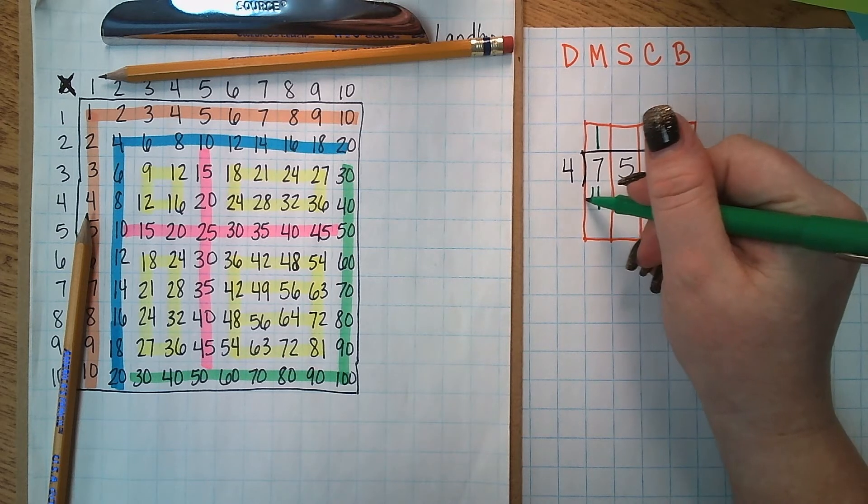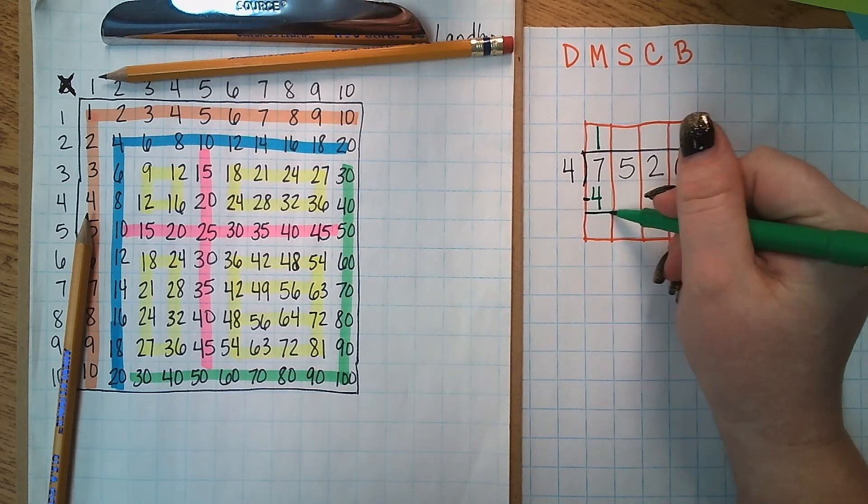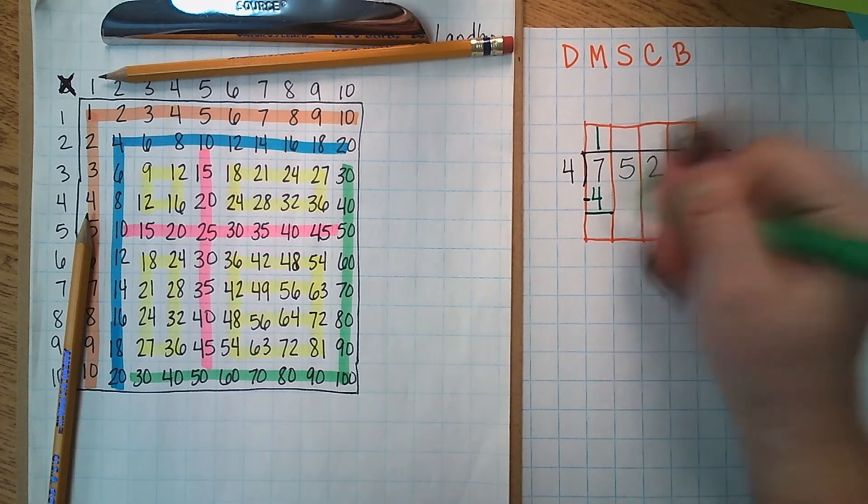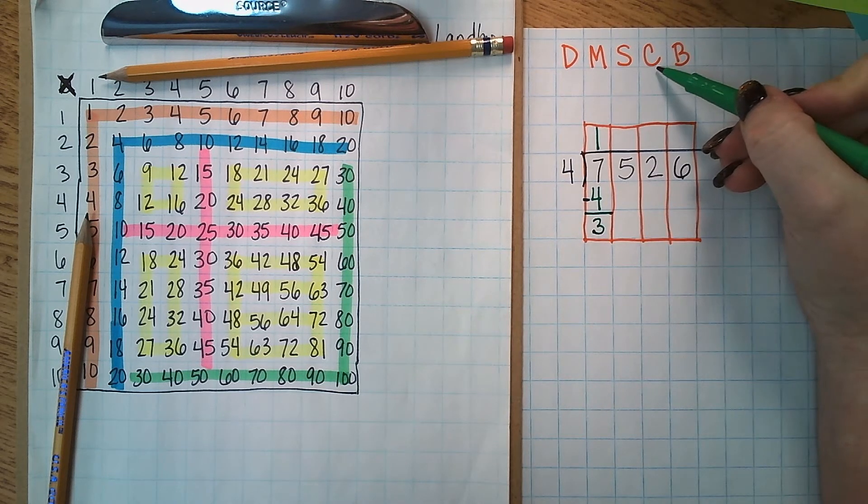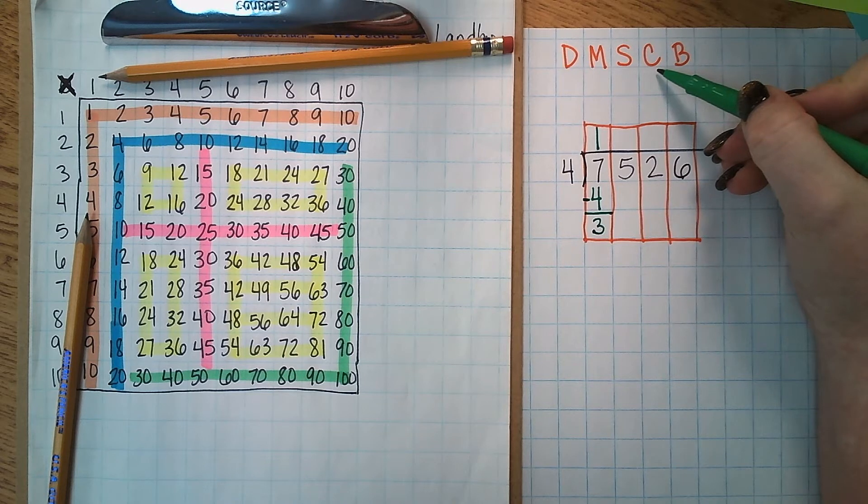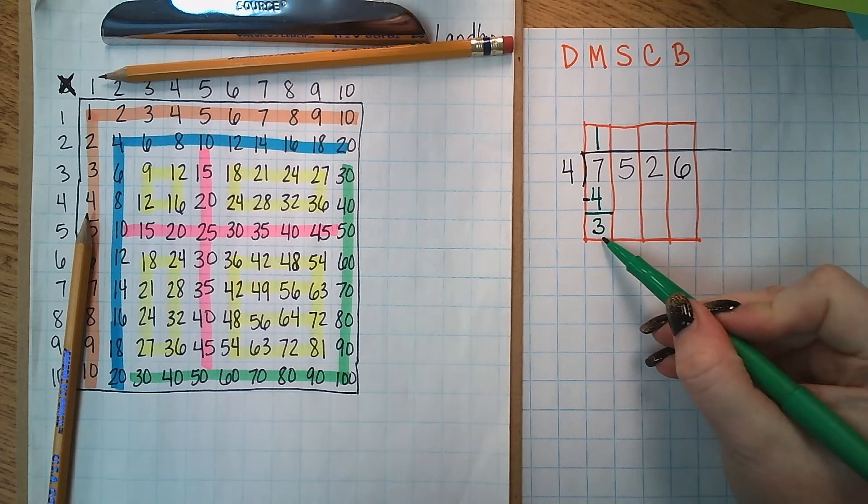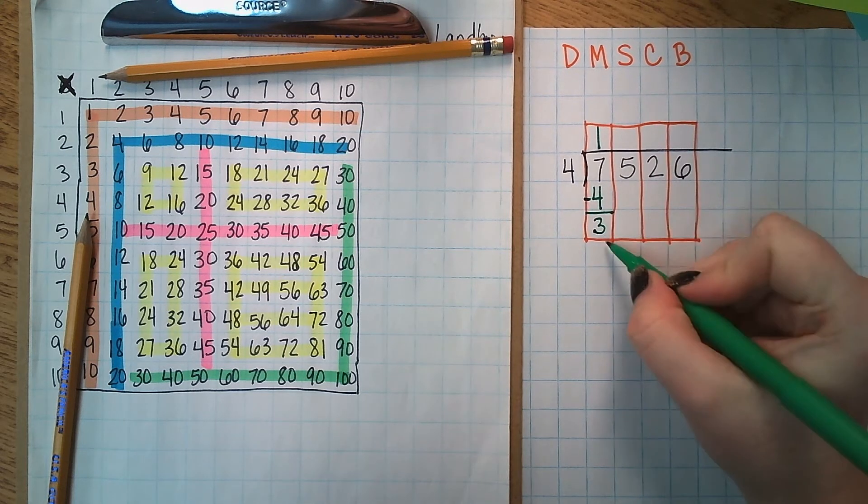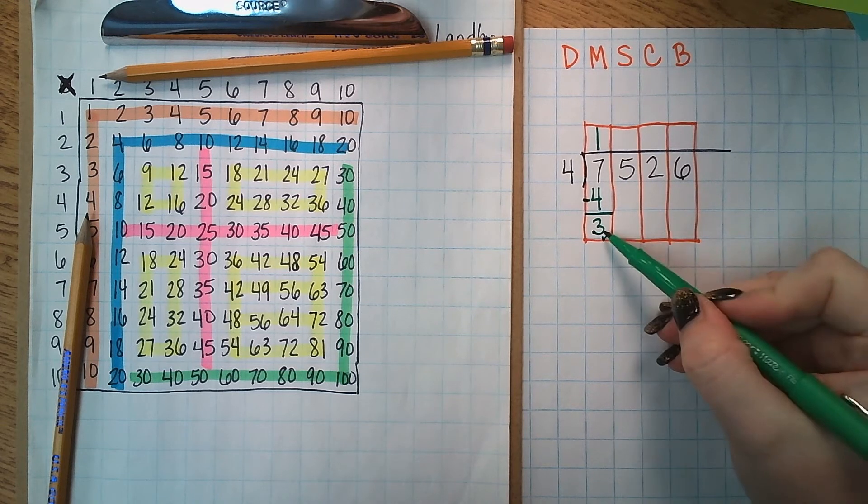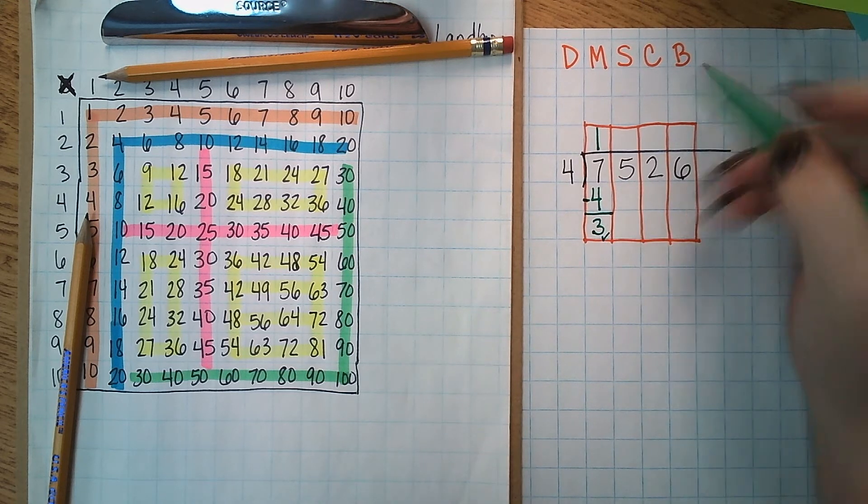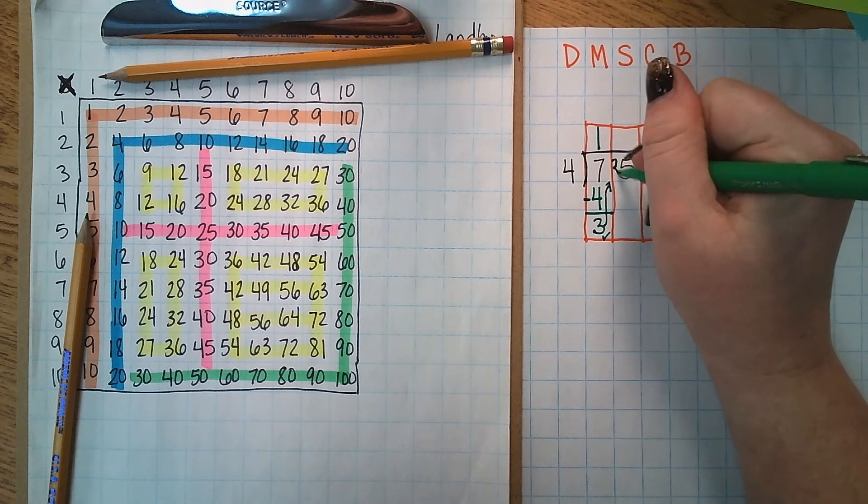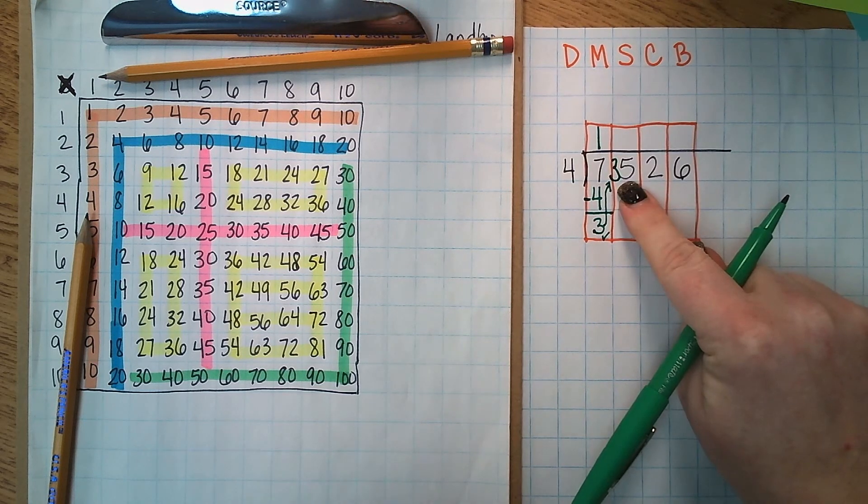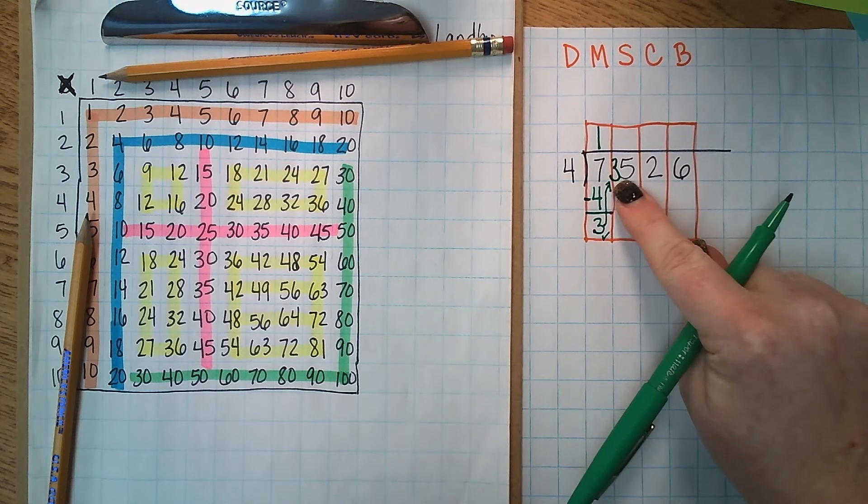So now since I have that I can go ahead and subtract. Seven minus four is three. Now I can check my remainder. Is three less than four? Yes it is. Now I'm going to do my B. So I'm going to bring it up and I'm going to write that three in front of my five. So now I'm working with 35.